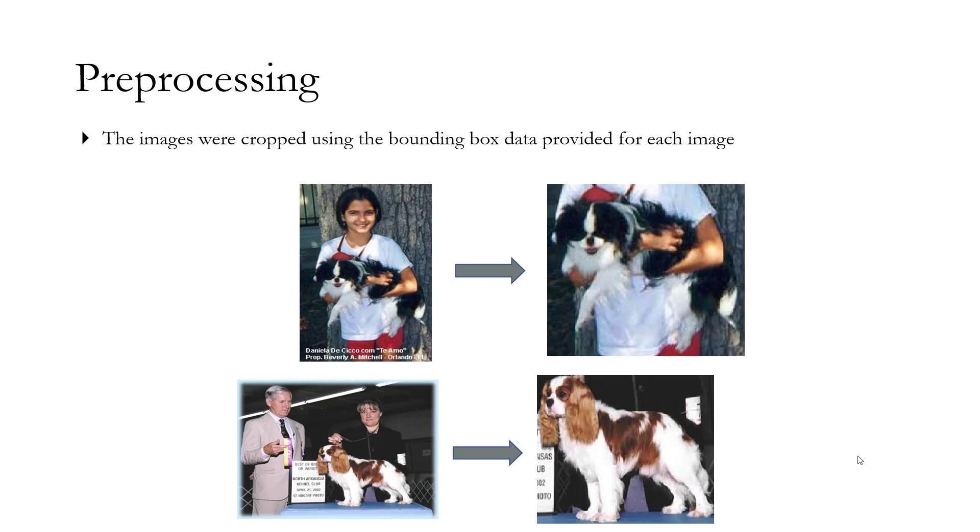The second preprocessing step that I did was I cropped each image using the bounding box provided in the annotations file. This was done essentially because in a lot of images there was extra noise. For example, in these images there is a human being standing behind the dog where only the dog is important. If the model tries to learn the dog from here, it captures along with it a lot of bias and noise. Just so that the model learns only information about this particular dog, we crop it out into this form.